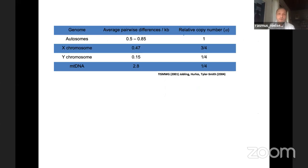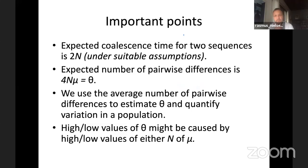To summarize the key points: the expected coalescence time is 2N generations; the expected number of pairwise differences is 4Nμ = theta; we use the average number of pairwise differences to estimate theta; and high or low values of theta may be caused by higher or lower values of either N or μ, if the model is correct.